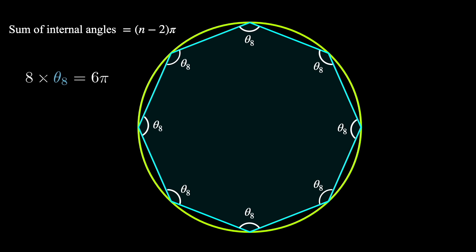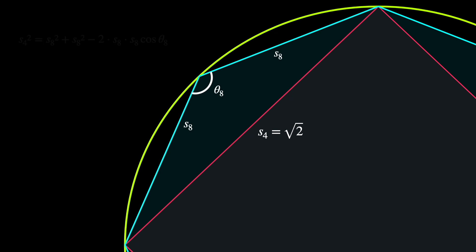The internal angles of a regular octagon sums to 6 pi and every angle is equal. So this angle is 3 pi over 4. Now we can consider the cosine law for this triangle. By the property of cosine function, we get an expression in terms of cosine pi over 4.